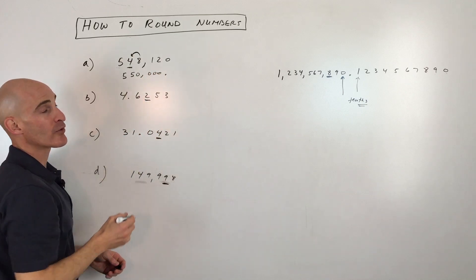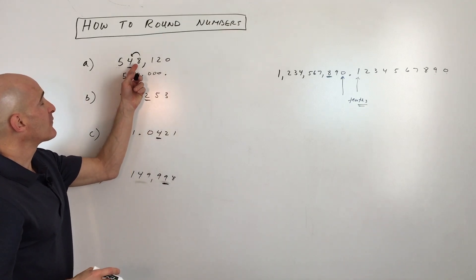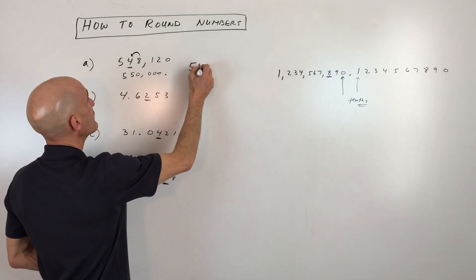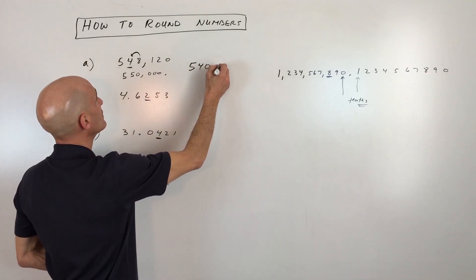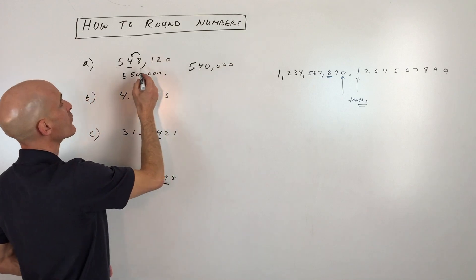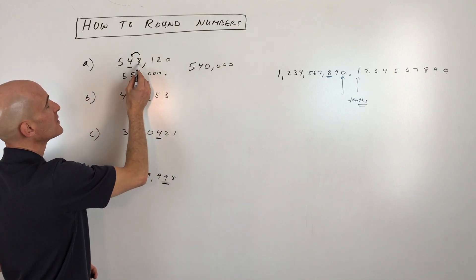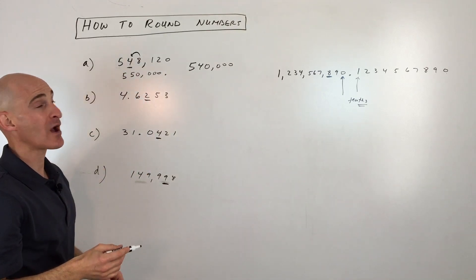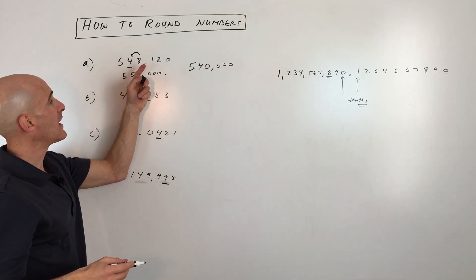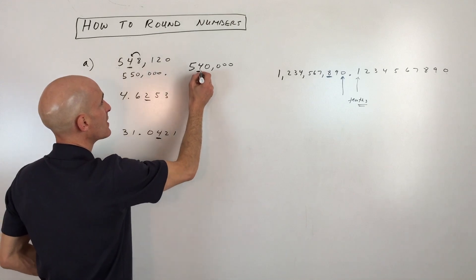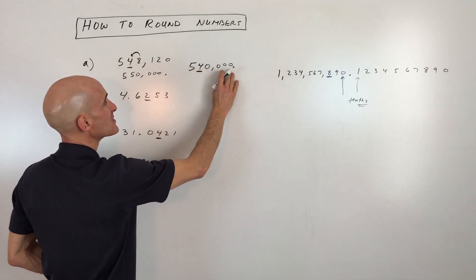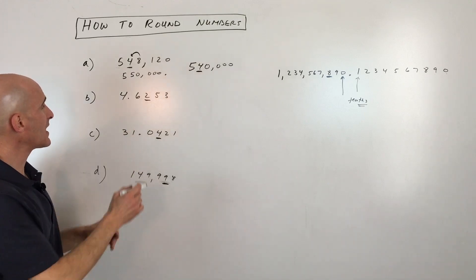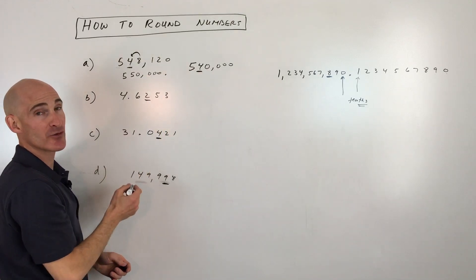If that digit had been a four instead of an eight, it wouldn't be enough to round up, so we'd round down. The result would be 540,000. When rounding down, the target digit stays the same and the digits to its right all become zeros.